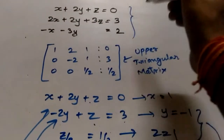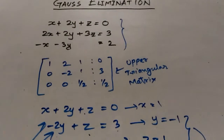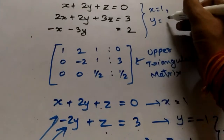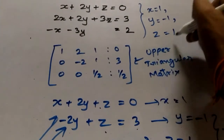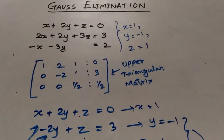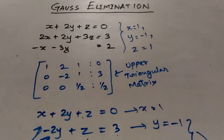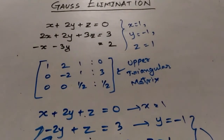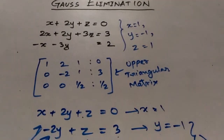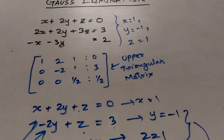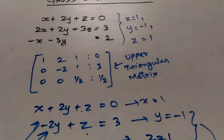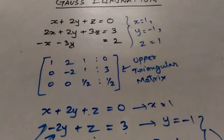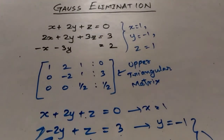So from this problem we get the solutions as x equals 1, y equals minus 1, and z equals 1. This was how we solve problems using the Gauss elimination method. It is a very easy method to solve simultaneous linear equations. In the upcoming videos I will discuss the rest of the non-iterative methods and then the most important iterative method, the Gauss-Seidel iterative method. Thank you.